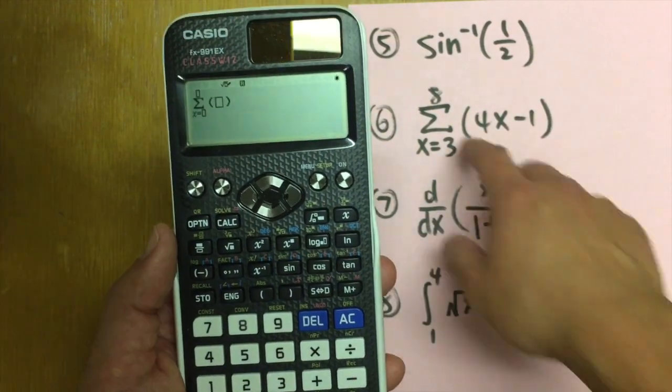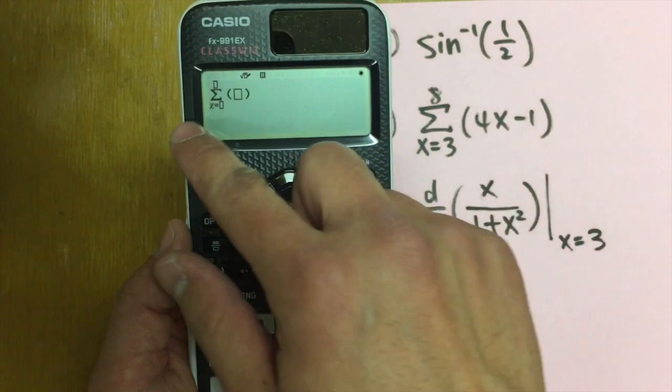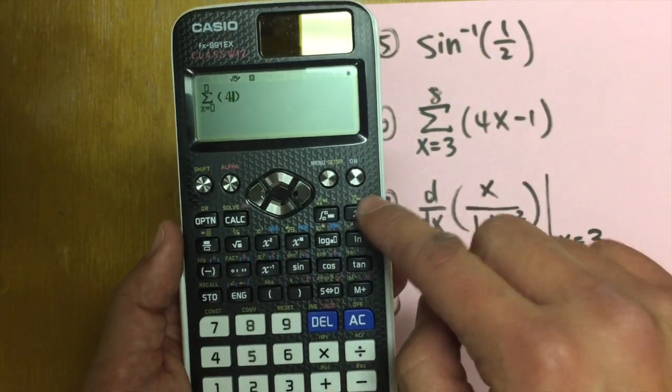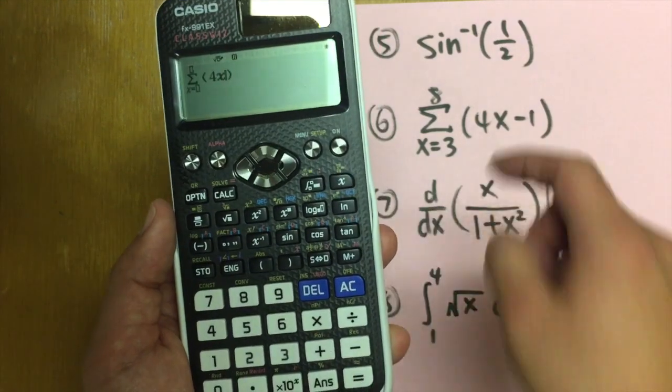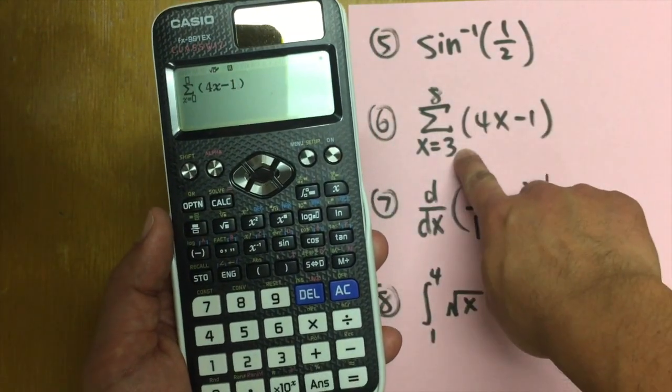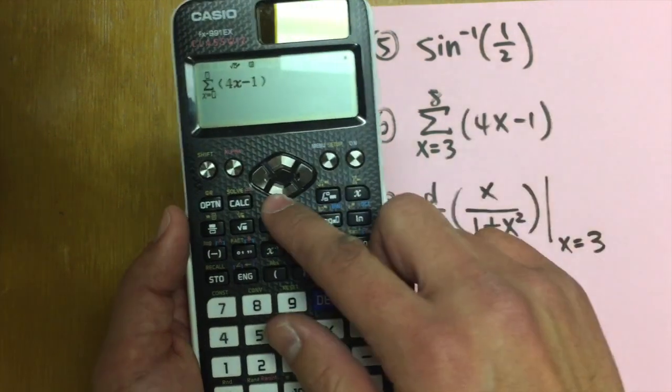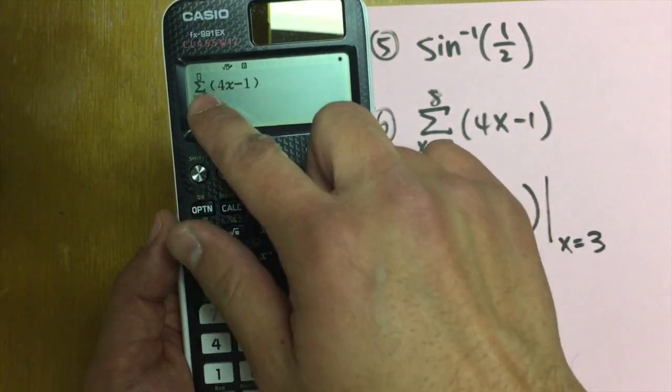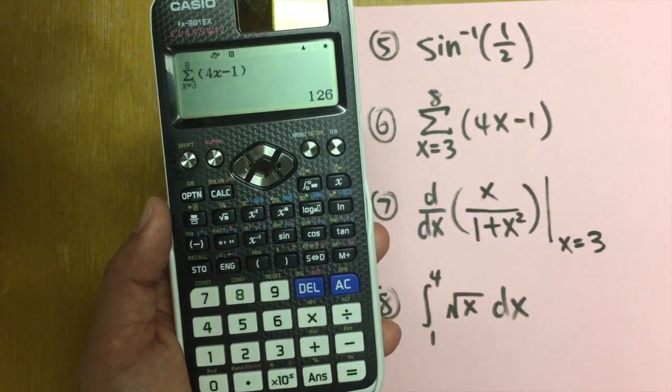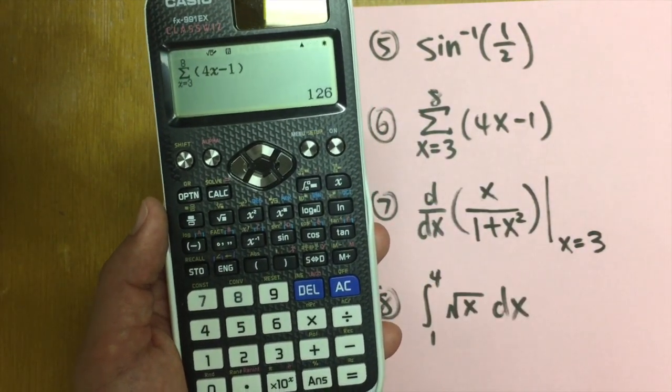Shift and this. We have the summation. Right here, we have to use x because the calculator says so already here. Alright. And let's enter the inside. We have four. And let's use this x right here. Four x minus one. And we also have to know x goes from three to eight. So be sure you just press down right here. Enter three. And we go up. And we have eight. And we have the answer 126. Excellent.